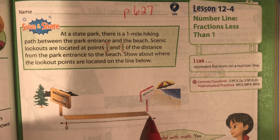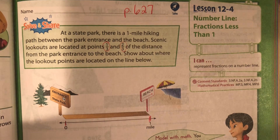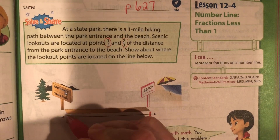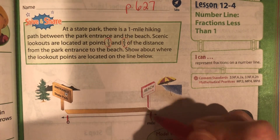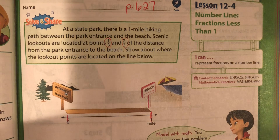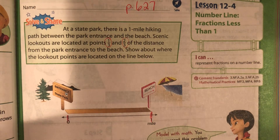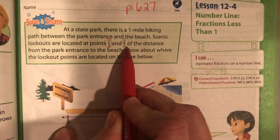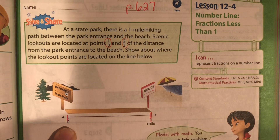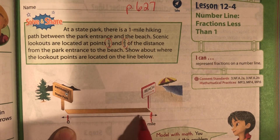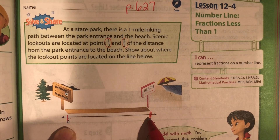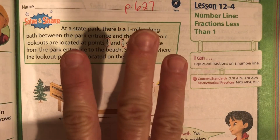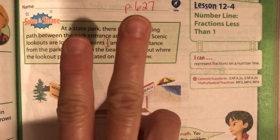Show about where the lookout points are located on the line below. Whenever we are doing fractions on a number line, the first thing we have to do is draw the point marks for 0 and 1. That has to be done at the very beginning before you can start dividing that line up. You have to draw the 0 and the 1. Now, our denominator in both of these is 3, which means that we're going to divide this into 3 equal parts, which means if we have 3 parts, we're going to draw 2 lines.